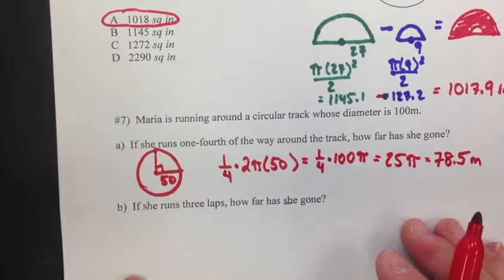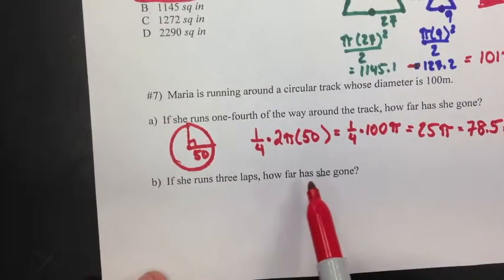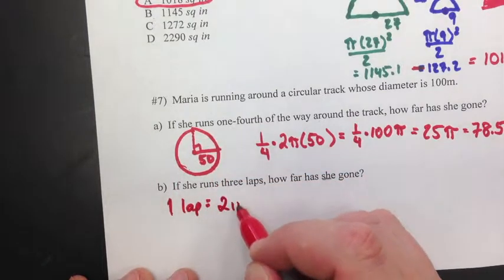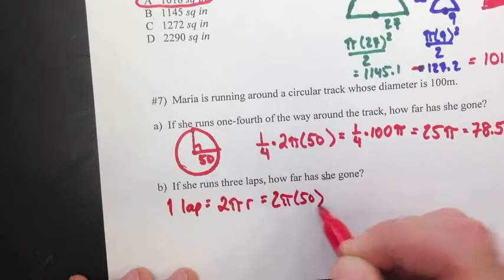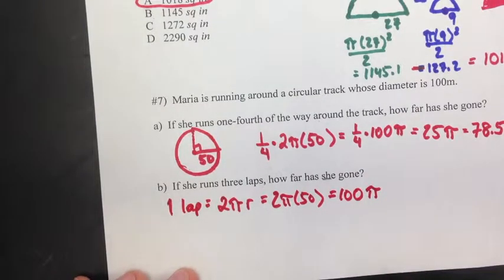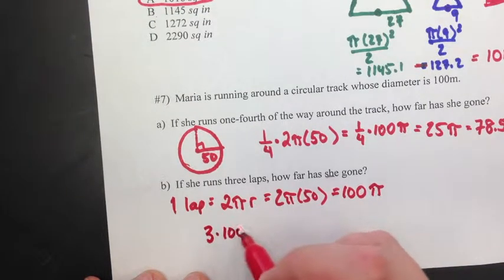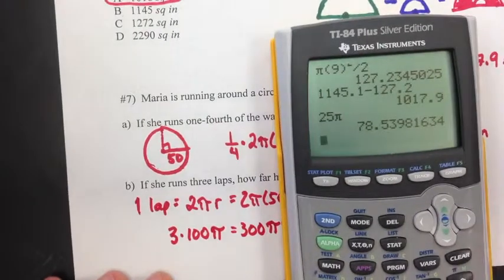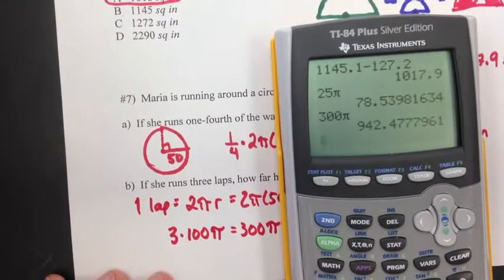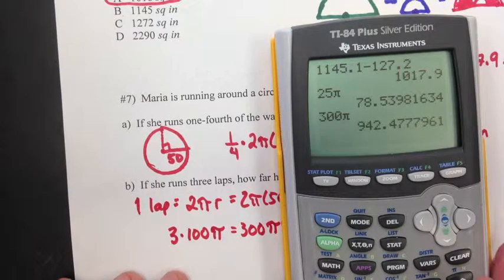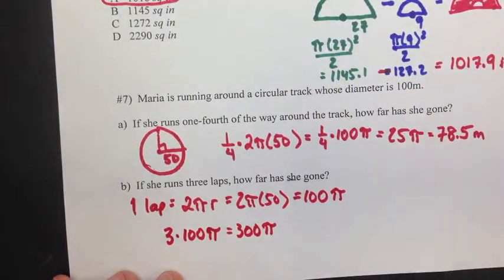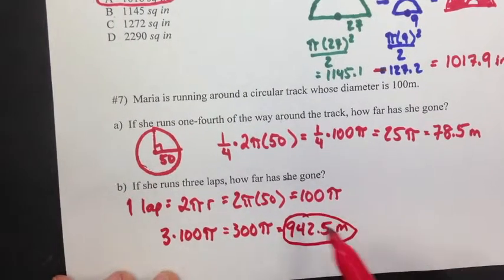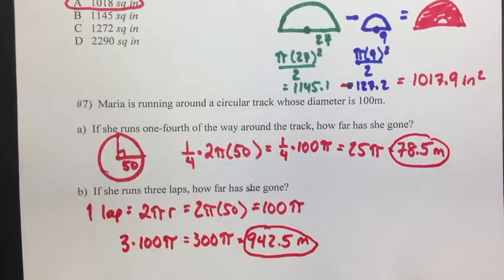All right, now the last one here, part b. If she runs three laps, how far has she gone? Well, one lap is one time around, which is 2 pi r. 2 pi times 50. So that was 100 pi meters. That's one lap. If she runs three of those, then she goes 3 times 100 pi, which is 300 pi. Or, as a decimal, 300 pi, and that's 942.5 meters. And it's a distance. So I'm not going to do meters squared. It's just 942.5 meters. And that is the end of the notes.